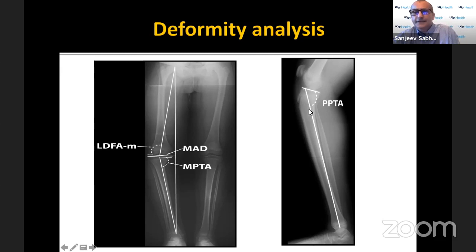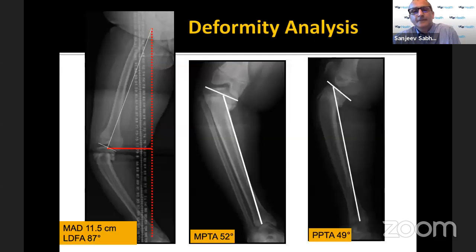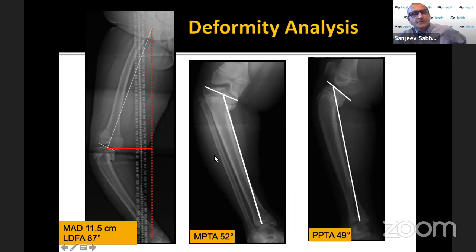Don't forget looking at the lateral view on physical exam. Because of procurvatum, the proximal posterior tibial angle is going to be less than 80 degrees, which is normal. This is another typical moderately severe early onset Blount's where all the numbers suggest Blount's as opposed to physiologic varus.